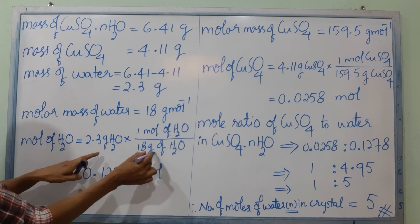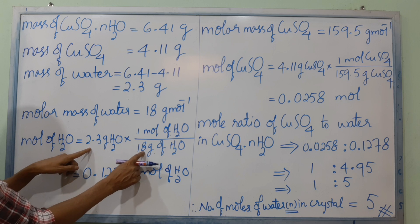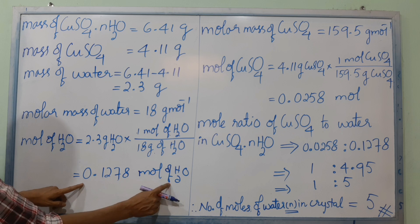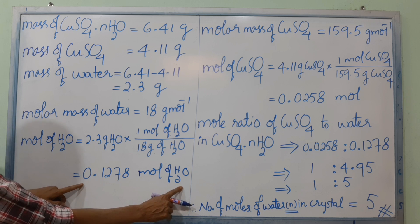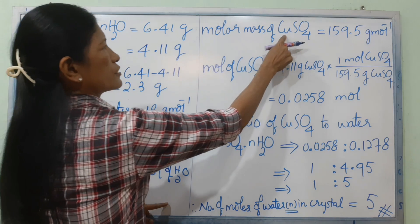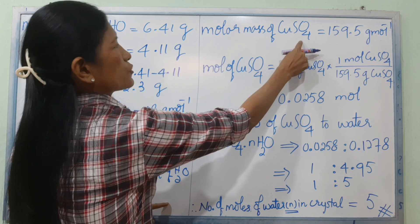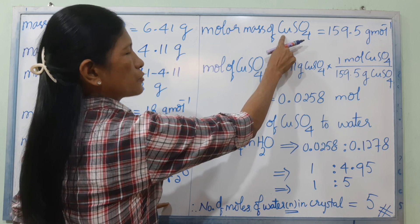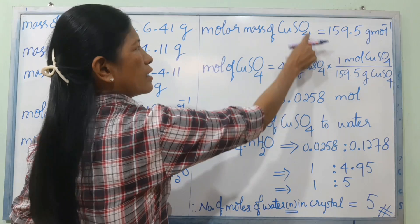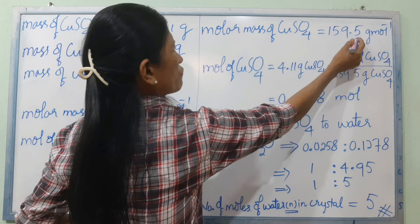With 2.30 grams of water and a molar mass of 18 g/mol, the number of moles of water equals 2.30 divided by 18, which gives approximately 0.1278 moles. The molar mass of CuSO4 is about 159.5 g/mol, giving approximately 12.95 grams.